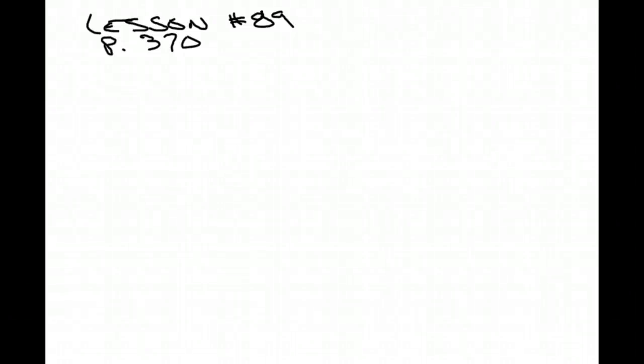This is lesson 89, March 18th, Monday, and it starts on page 368. But actually I'm going to skip conjunctions and disjunctions, and what we're going to do is start on page 370, which is 89.C, products of cords and secants.